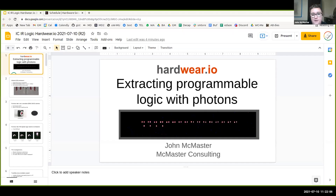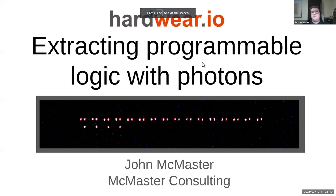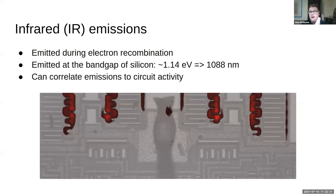Thank you very much for that warm introduction. Bomb disposal robots — they're growing in number, and hopefully I'll get to do a presentation at some point before they take over the world. Let me get a screen share up here. So I gave a talk a few years ago about how when computer chips operate — ICs — they give off some infrared emissions as the circuit is operating. Basically these are at around 1100 nanometers.